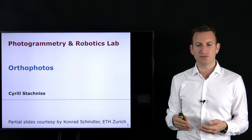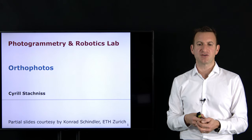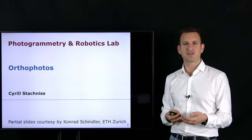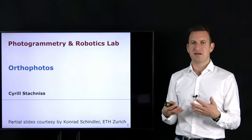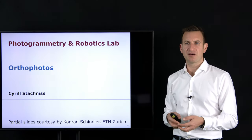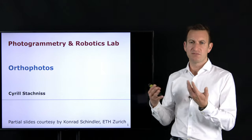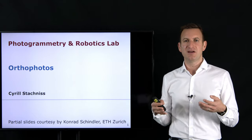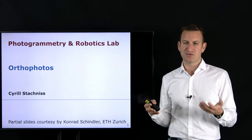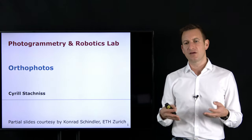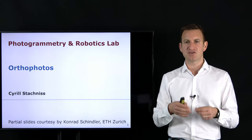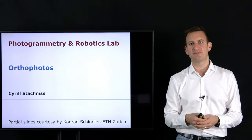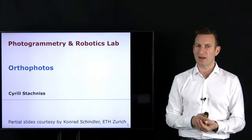In today's lecture, we will look into orthophotos, which are a special form of images that allows you to perform these types of measurements. We will discuss how we can obtain those images, and how we can turn actual photos taken with a standard camera into orthophotos, so that we can perform measurements within the XY plane. We can't still measure the Z direction, but with respect to the X and Y orientation.